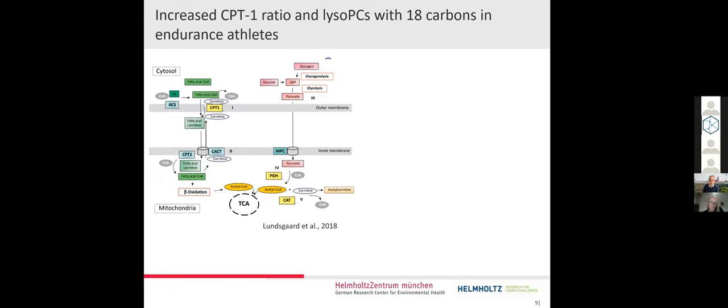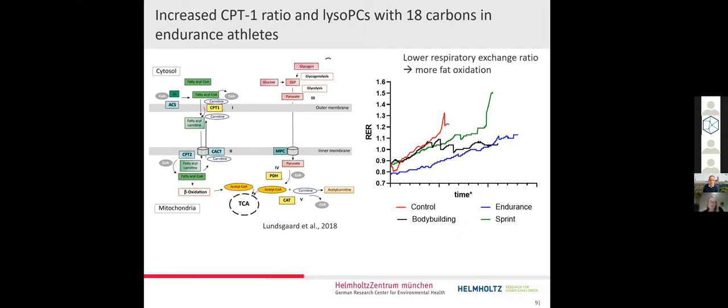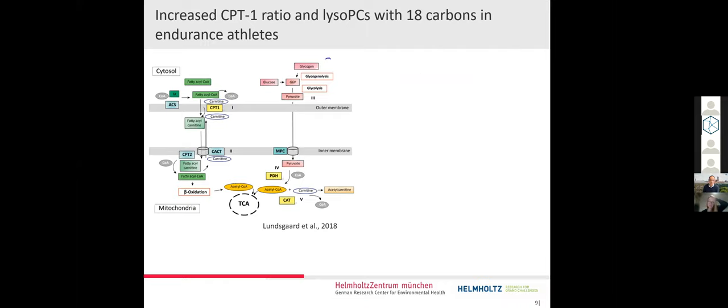CPT-1 is a mitochondrial transmembrane enzyme that transports fatty acids from the cytosol into the mitochondria, which can then enter beta-oxidation. What this ratio indicates is the efficiency of beta-oxidation, the activity of this reaction. Therefore, we assumed that either our endurance athletes have at baseline higher capacity to oxidize fat or acutely higher fat oxidation rates due to the exercise they did.